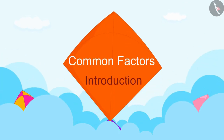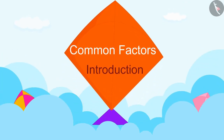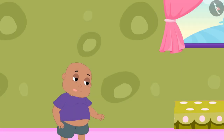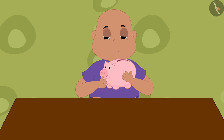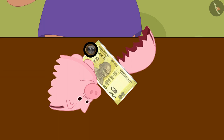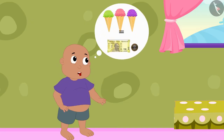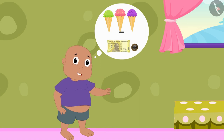Hello Children! In this video, we shall see what are common factors. Babloo loves ice cream. He broke his piggy bank today and got a 20 rupee note and a 10 rupee coin. Babloo decided that he would buy ice cream from his money in such a way that no money was left.